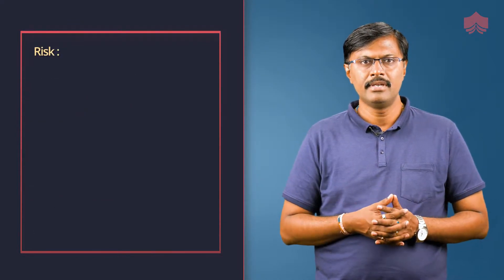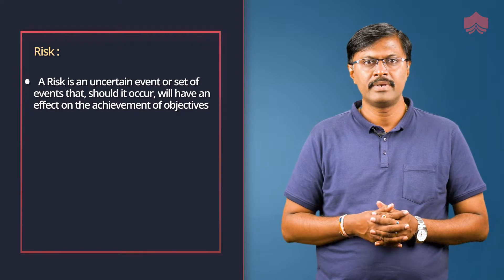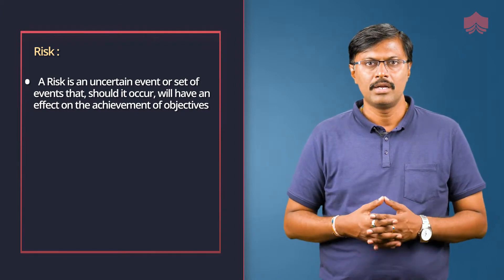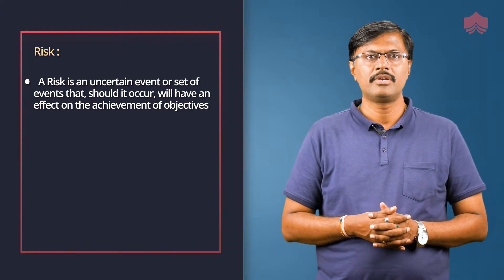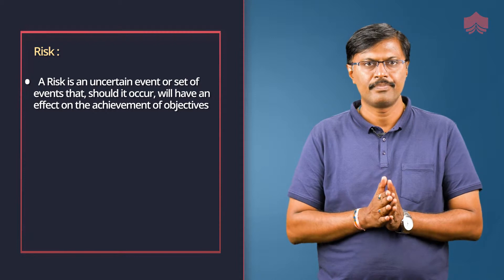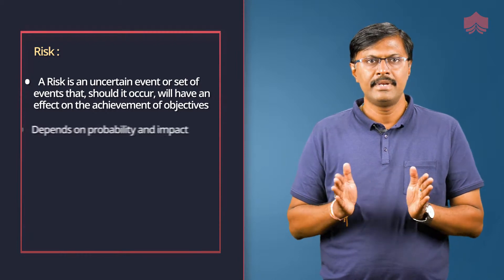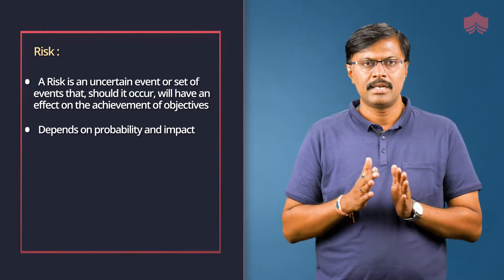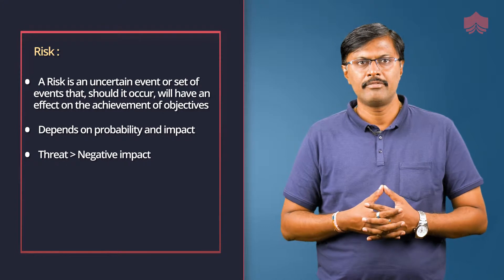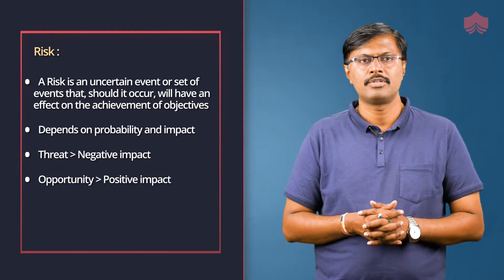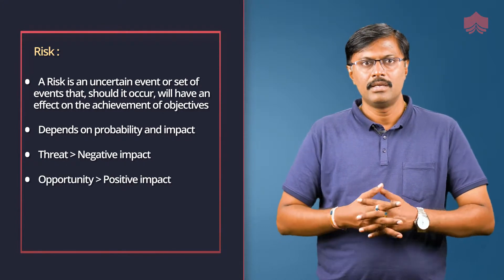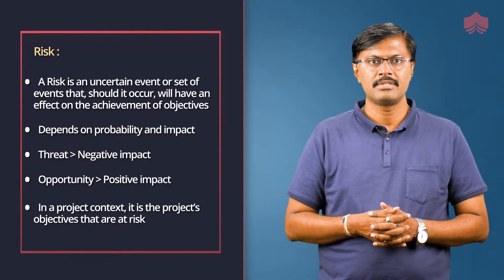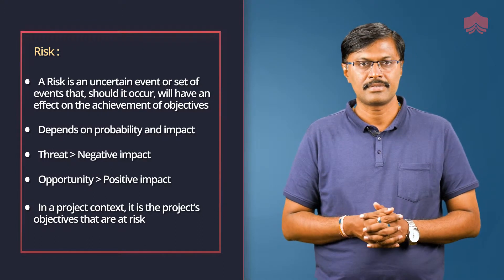Risk is an uncertain event or set of events that, should it occur, will have an effect on the achievement of objectives. It depends on probability and impact. Threat refers to negative impact, and opportunity refers to positive impact. In the project context, it is the project's objectives that are at risk.